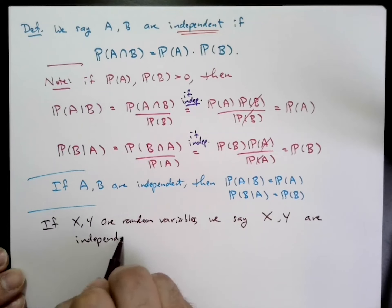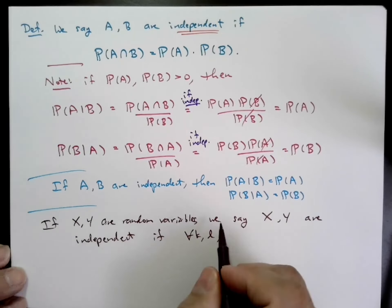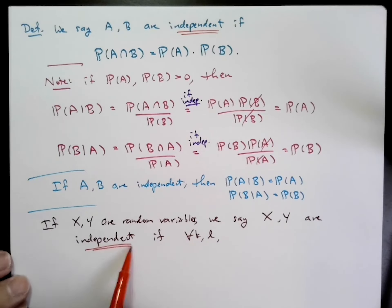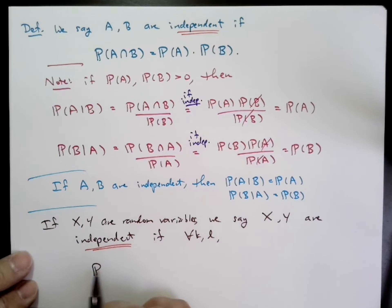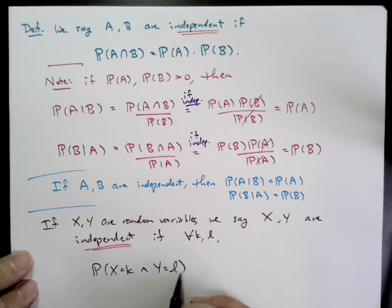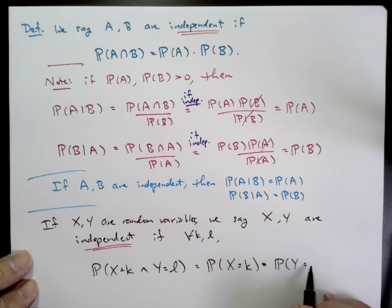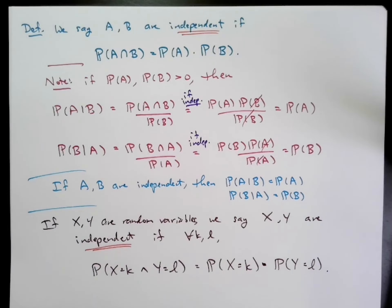We can define random variables being independent, which simply means that they're independent given any values. Specifically, for any K and L, the probability that X equals K and Y equals L is the probability that X equals K times the probability that Y equals L.